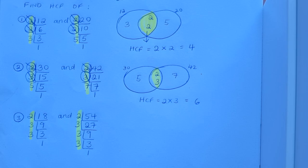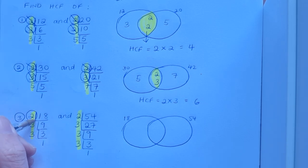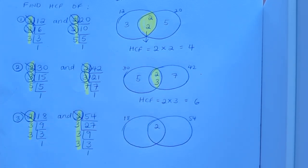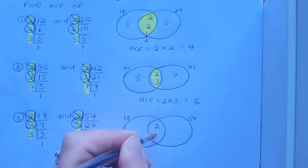So I want to draw my Venns. Let's have a look and see what matches up. Well I've got a 2 in the 18 set and a 2 in the 54. That's a match. In they go. I've got a 3 here and a 3 here. That's a match. In they go.